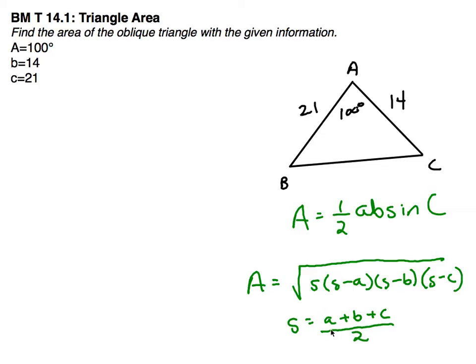Where S is what's called the semi-perimeter. That's half of the perimeter, so A plus B plus C divided by 2. In this case, we have two sides and the included angle, so we will be using the first formula.